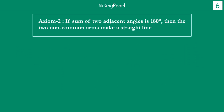Now we are going to talk about a second axiom, and it kind of follows from the first one we discussed. What it says is: if the sum of two adjacent angles is 180 degrees, then the non-common arms make a straight line. It is essentially saying the same thing in reverse.